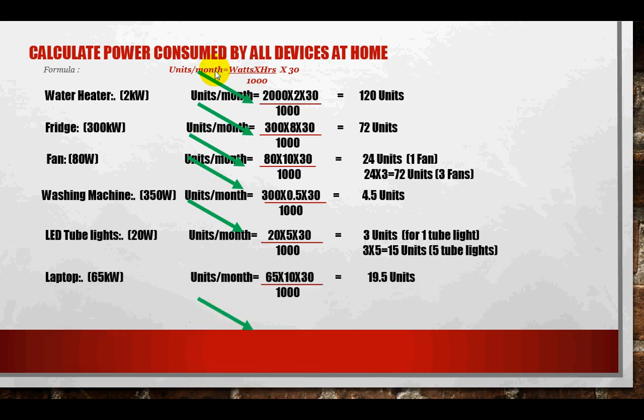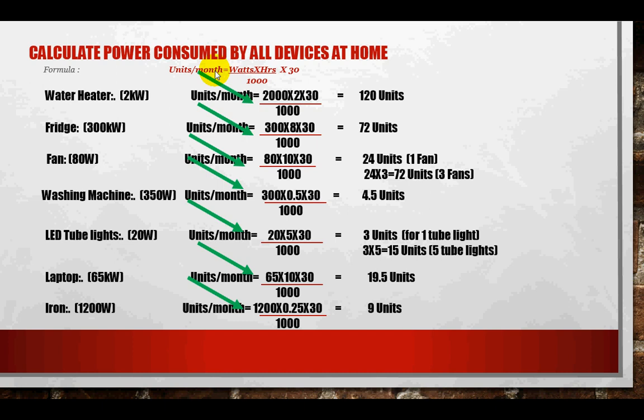A laptop or TV is about 65 watts, used for 10 hours per day over 30 days, consuming 19.5 units. Similarly, an iron box at 1020 watts used for 0.25 hours per day over 30 days gives approximately 7.65 units. This is how the individual unit consumption of each appliance is calculated using the formula.